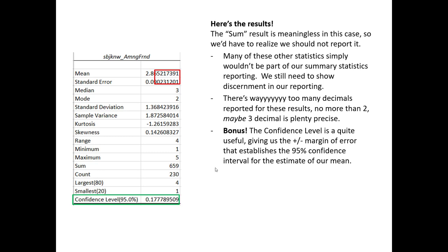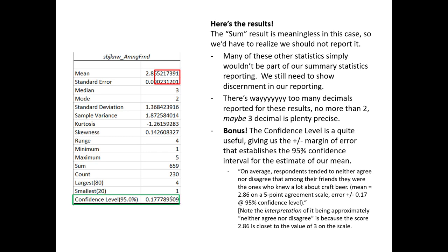There is one bonus here that we get that I didn't show earlier: we do get a confidence level estimate for our average. Our average is 2.86, and since it comes from a sample, this confidence level represents the precision and certainty we have at 95% confidence, plus and minus, for this particular average estimate. So here we could say that on average, respondents tended to neither agree nor disagree that among their friends they were the ones who knew a lot about craft beer, because the mean is 2.86 and a 3 meant neither agree nor disagree per the codebook.